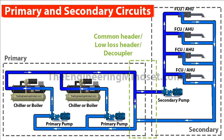Between the primary and secondary circuits there is a section of pipe known as the common header, also called the low loss header or decoupler. Water in this section can flow either way depending on building demand. For example, if all the fan coil units are calling for 100% cooling, all the chilled water flows from the chillers straight into the fan coil units and back around the primary circuit — in that case there is no flow through the header section at all.